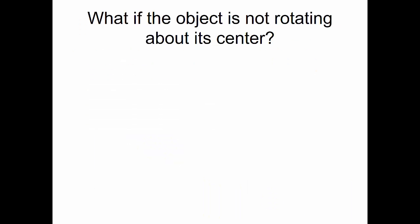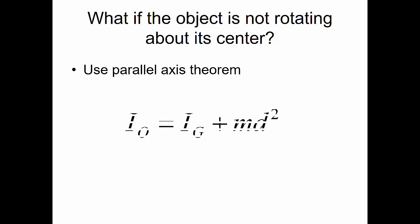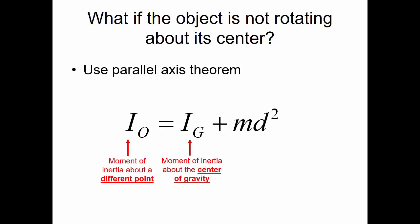What if the object isn't rotating about its center? We use the parallel axis theorem. The mass moment of inertia about some point O equals the mass moment of inertia about the center of gravity plus the mass times the distance from the center of gravity to the point of interest squared. I_O is the moment of inertia about the new point, I_G is the moment about the center of gravity, M is the mass, and D is the distance from the center of gravity to the new point.